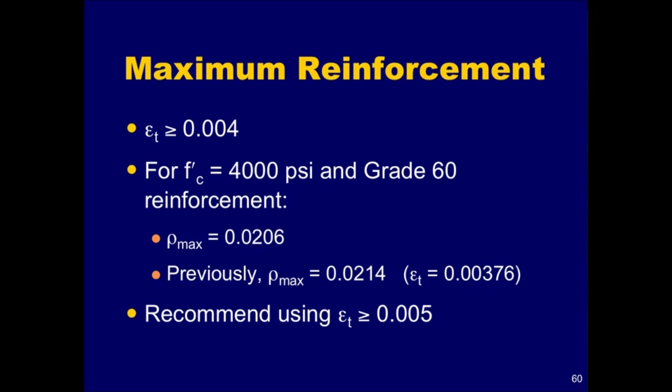A concrete section with reinforcement greater than the balanced reinforcement will fail in a brittle manner, which is undesirable. A maximum reinforcement ratio for beams and slabs is not given directly in ACI 318-05. Instead, Section 10.3.5 requires that non-prestressed flexural members must be designed such that the net tensile strain in the extreme layer of longitudinal tensile steel at nominal strength, epsilon sub T, is greater than or equal to 0.004. In essence, this requirement limits the amount of flexural reinforcement that can be provided in a section.